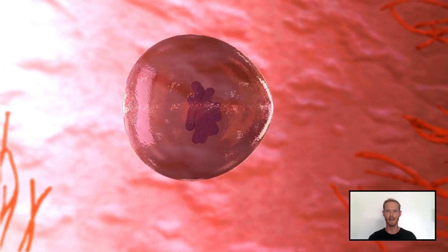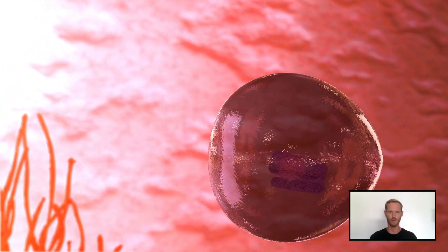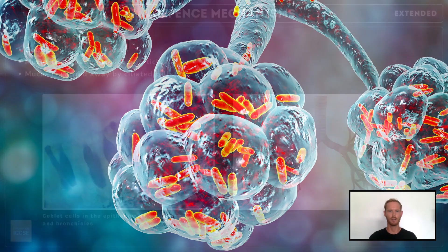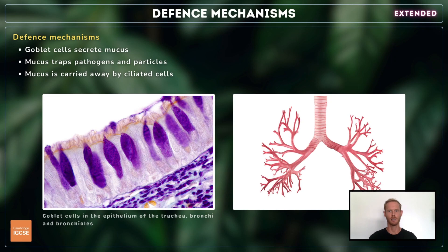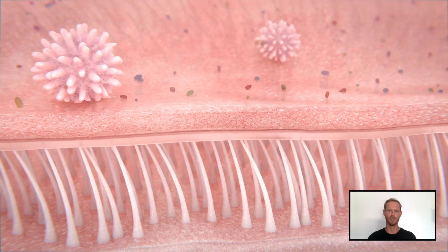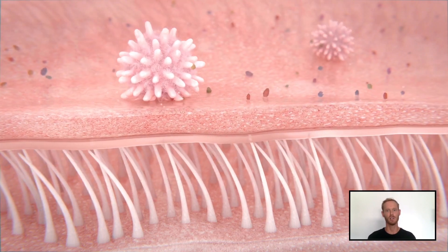Finally, you need to know how the gas exchange system protects itself from pathogens and particles. The alveoli are extremely delicate and vulnerable to physical damage and infection. To prevent particles in the air from reaching them, specialised cells called goblet cells in the lining of the trachea, bronchi, and some of the larger bronchioles secrete a sticky liquid called mucus. The mucus traps pathogens and dust, and is then carried away by ciliated cells in the epithelium. The continuous movements of the cilia carry the mucus up towards the top of the trachea so that it can be swallowed.